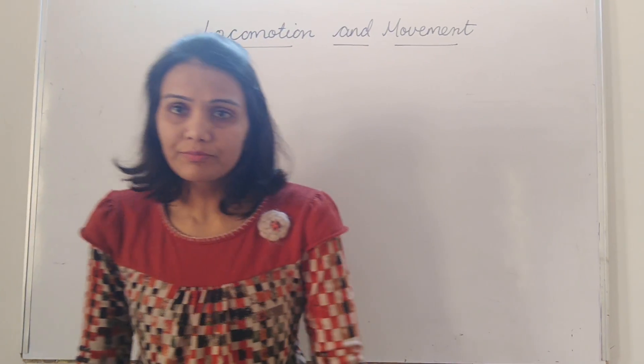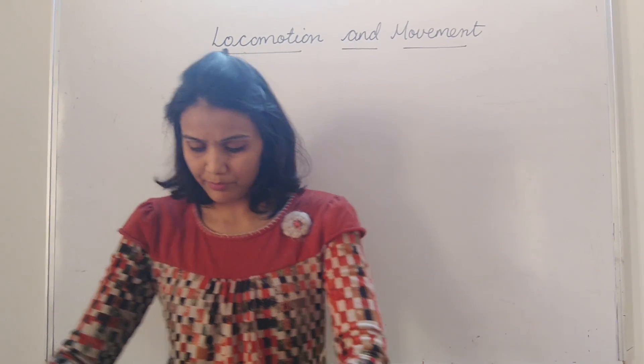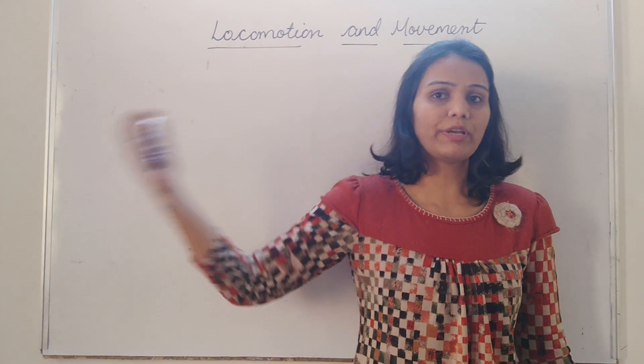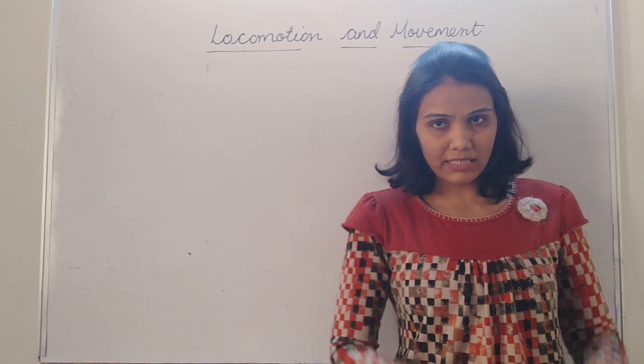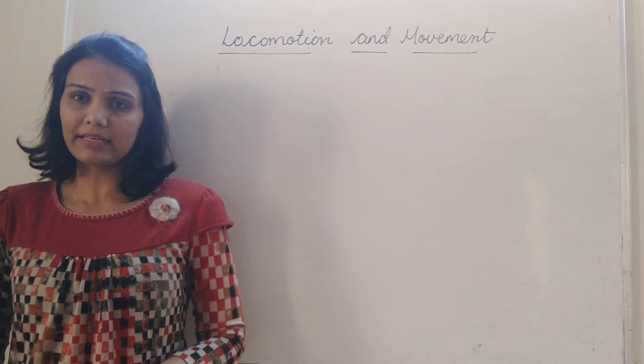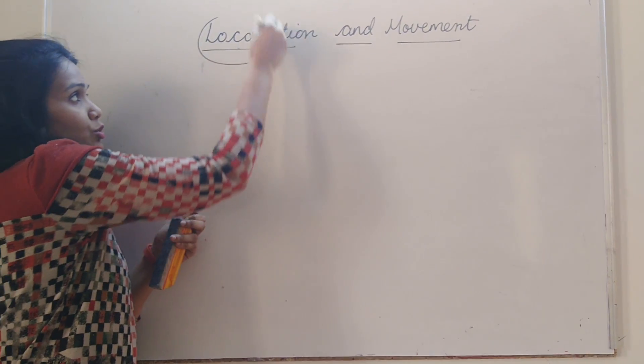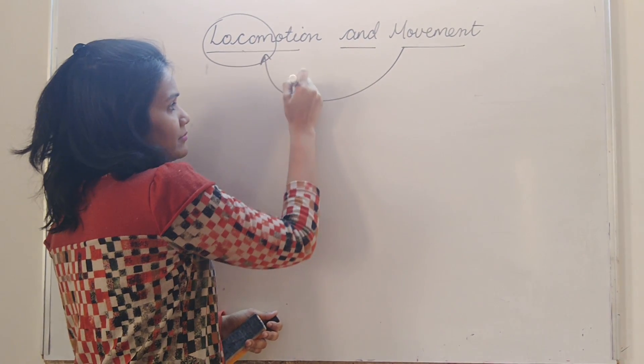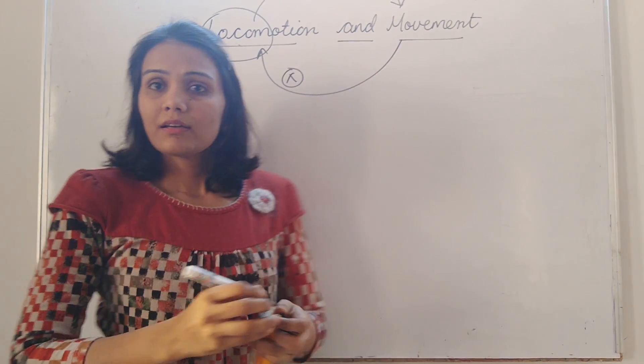So we move, my hand is moving and I am changing my position from this place to this place. When my hand is moving, it is movement. But when I am changing my place from one place to another place, then it is locomotion because I am locating. So all movements are not locomotion, but all locomotion are movement.